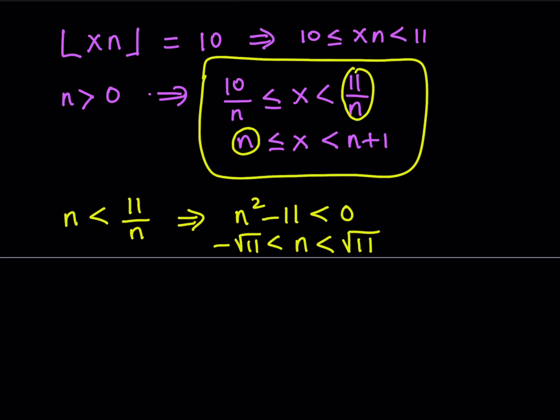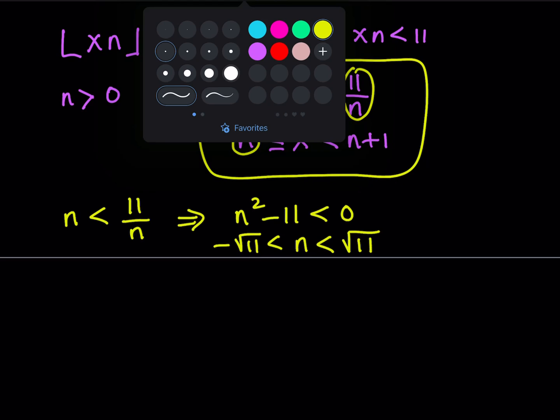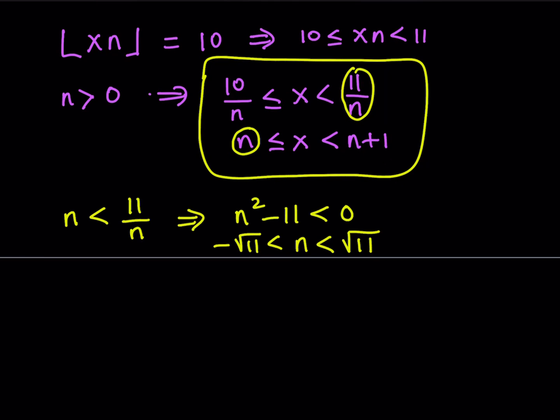And of course, this inequality has a solution where n is between -√11 and +√11. So that's the first inequality we need to solve for n. Now the second part comes from here. If you look at the boundaries again, we can safely say that 10/n is always going to be less than n+1. 10/n is less than n+1. And from here, if you do the math, and remember that n is positive in this case, we get n² + n - 10 > 0.